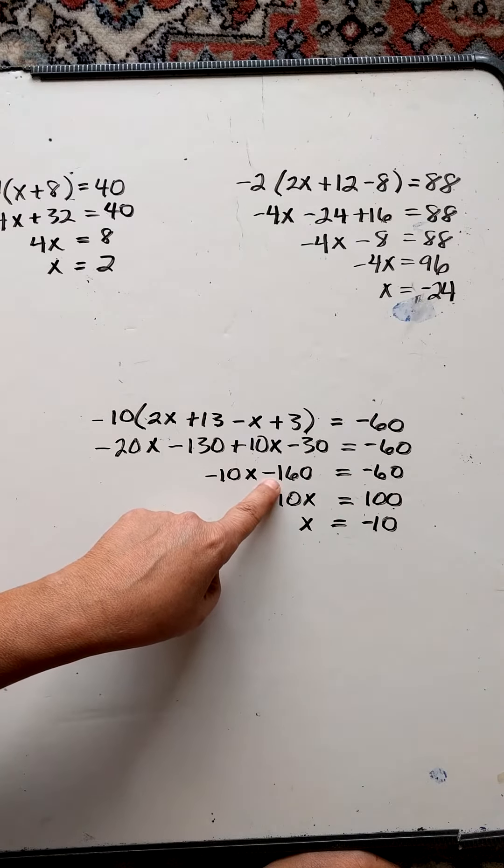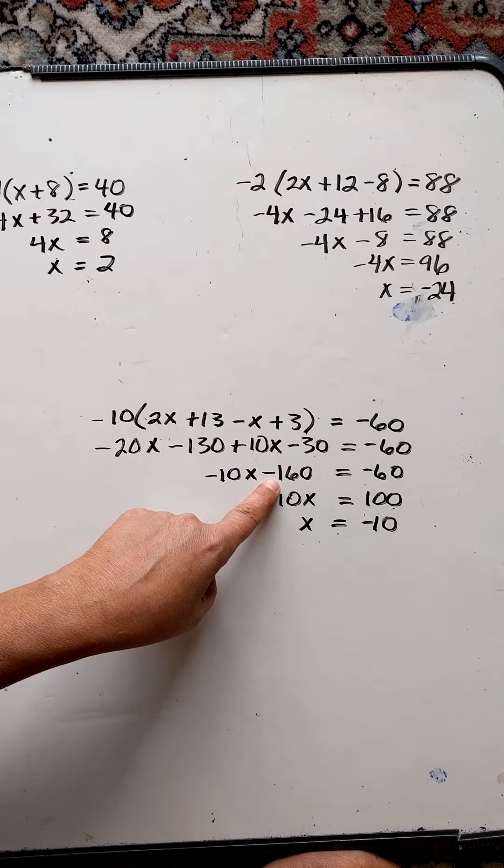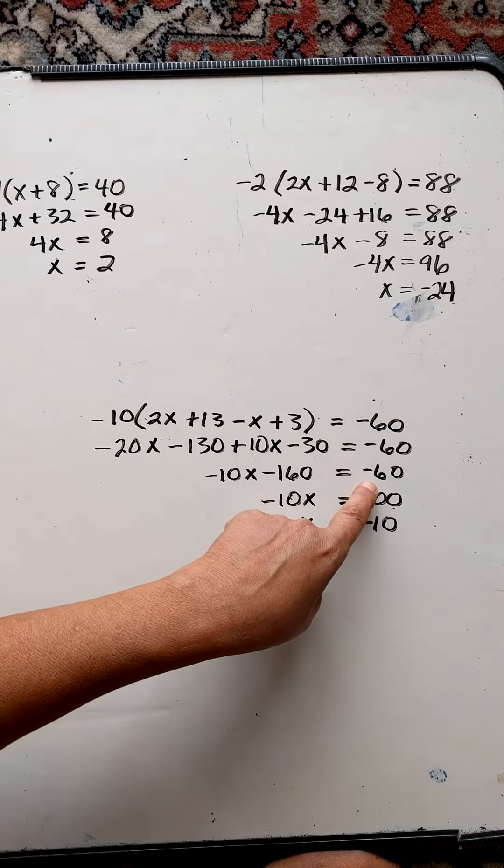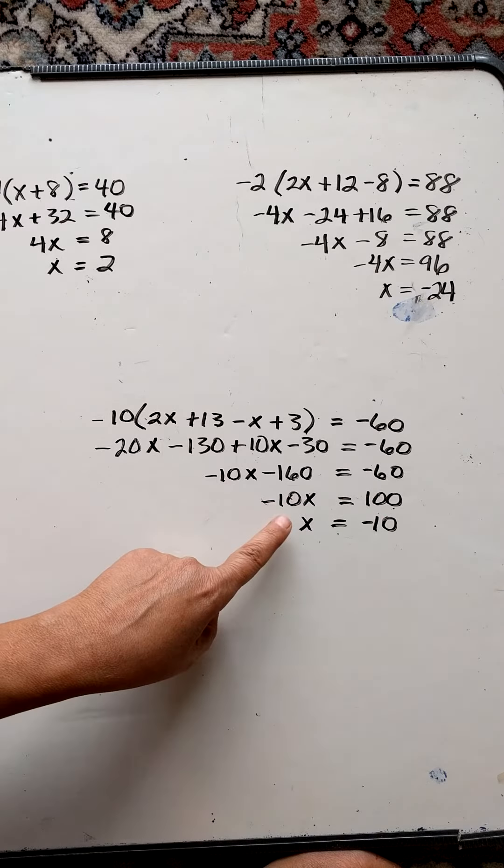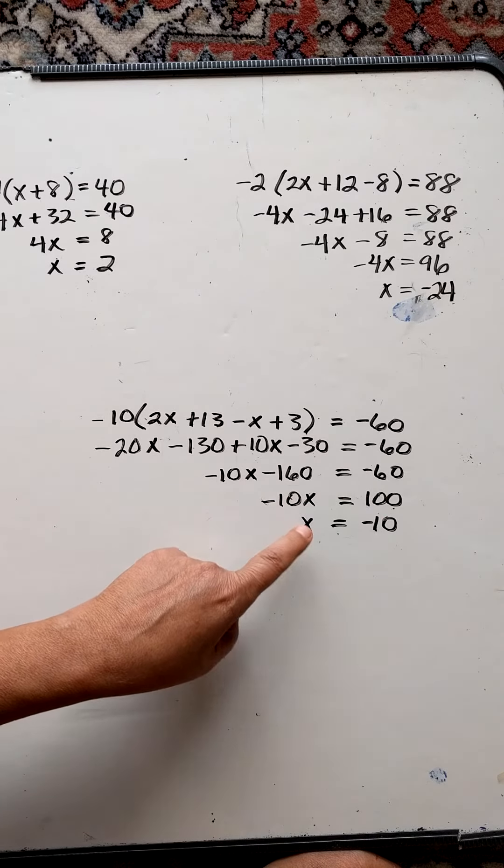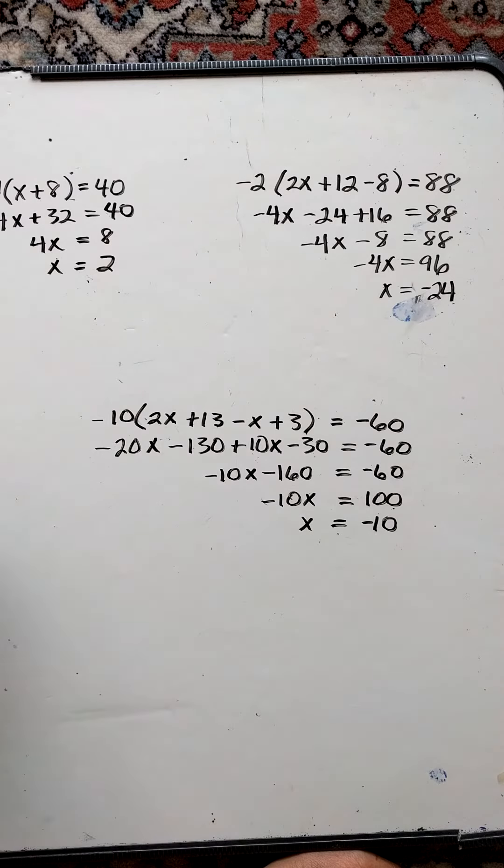Here I'm going to add 160 to both sides. When I do that, I'll bring the negative 10x down here. I add 160 to negative 16, and I just get a positive 100. I divide both sides by negative 10, and I get x equals negative 10.